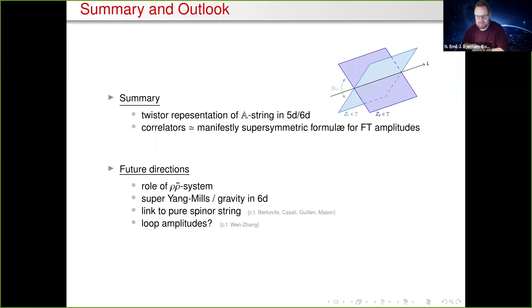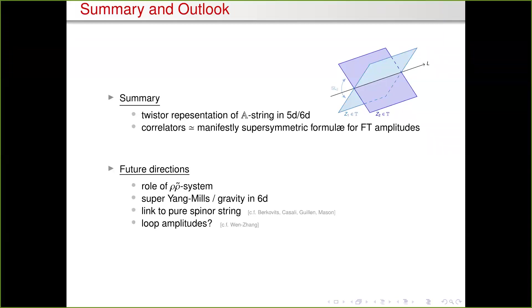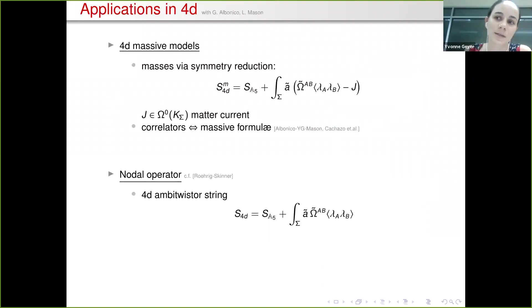Thank you very much. Any questions? I have a question - nice talk. I would like to know why you are requiring that the spinors describing the momentum P_A has to be the same. I mean, in principle in the four-dimensional twistor string you have lambda and lambda-bar, right? So why now are you - yeah, so why you don't do something like that for example for 6D or 5D?